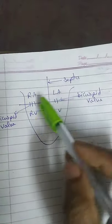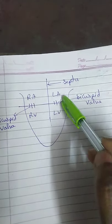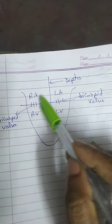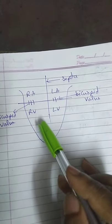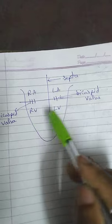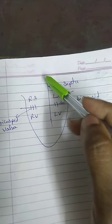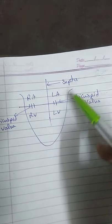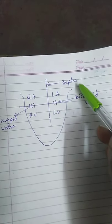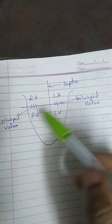The human heart is divided into 4 chambers. The upper two chambers are called atria — right atrium and left atrium. The lower two chambers are called ventricles — right ventricle and left ventricle. These four parts are divided by muscular partitions called septa. There is one vertical septa and one horizontal septa.